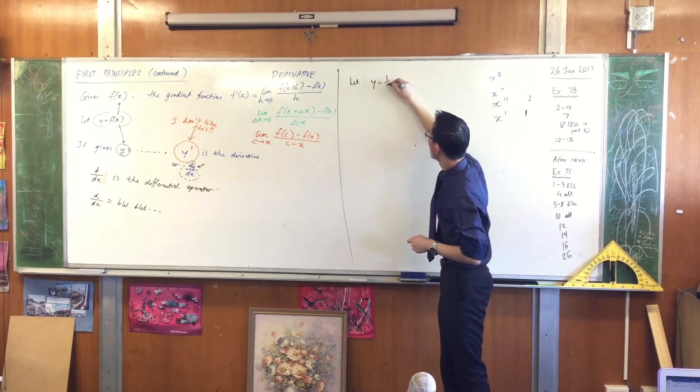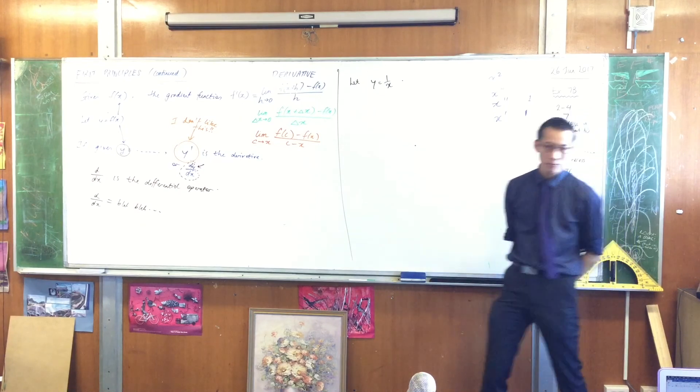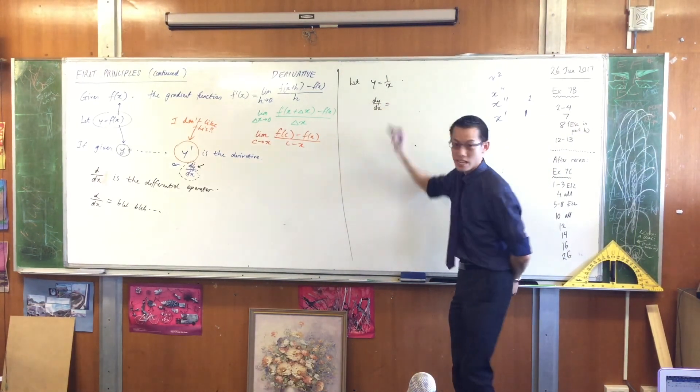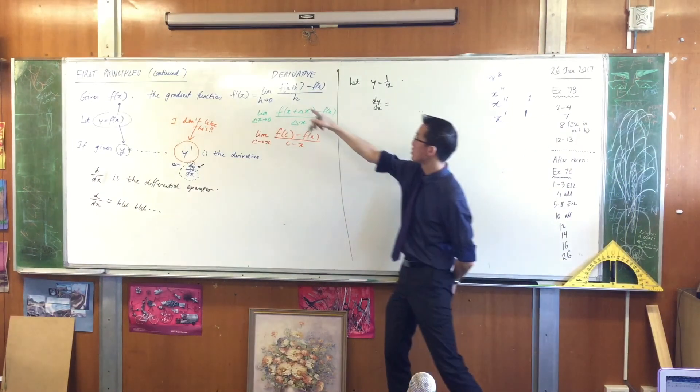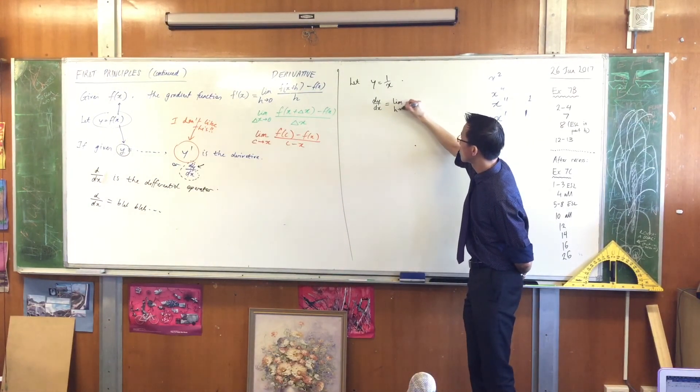Let's set y equal to 1 over x. So I can write dy/dx equals, and then I'm going to introduce my limit notation, just like I had here. So I'm going to say the limit as h approaches 0.